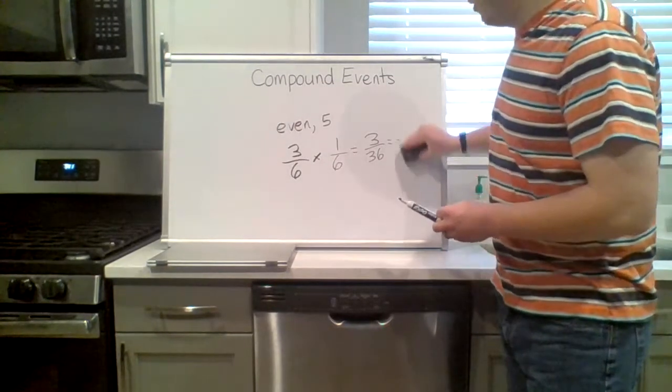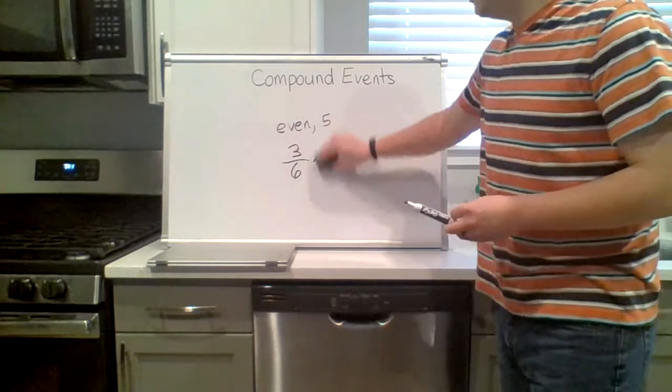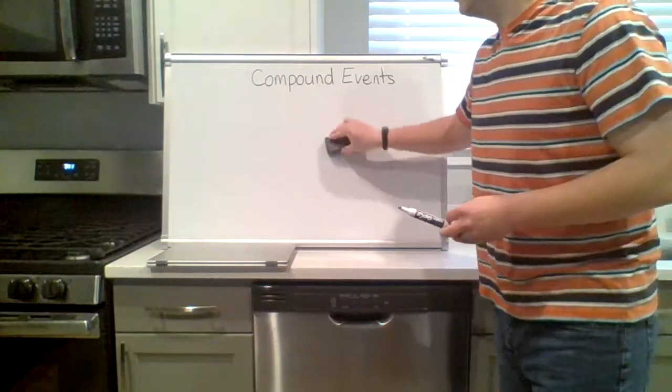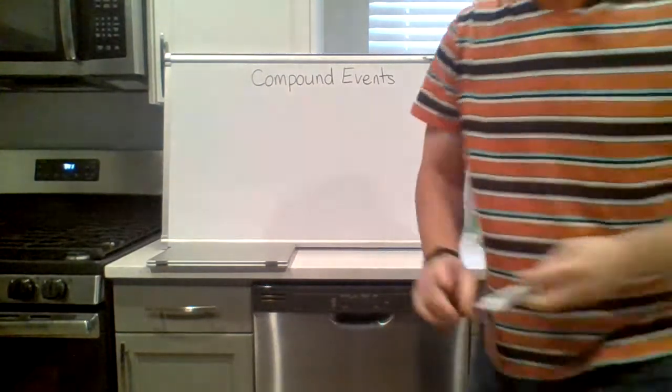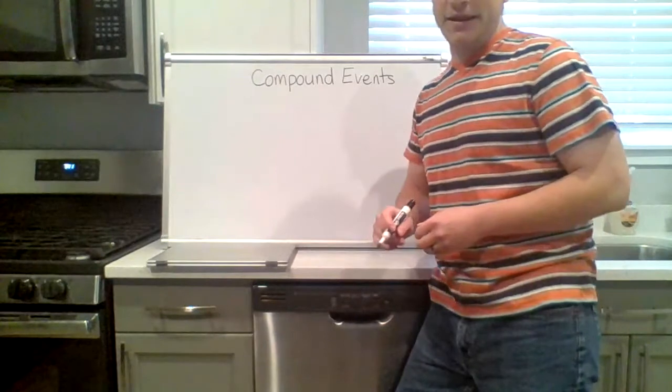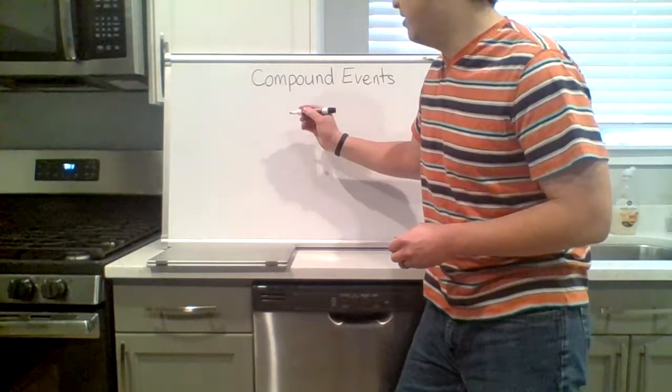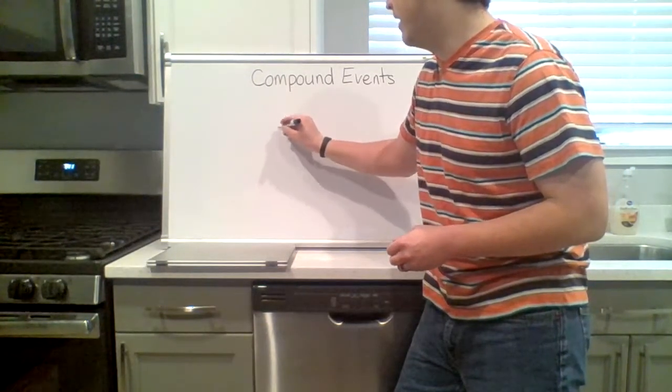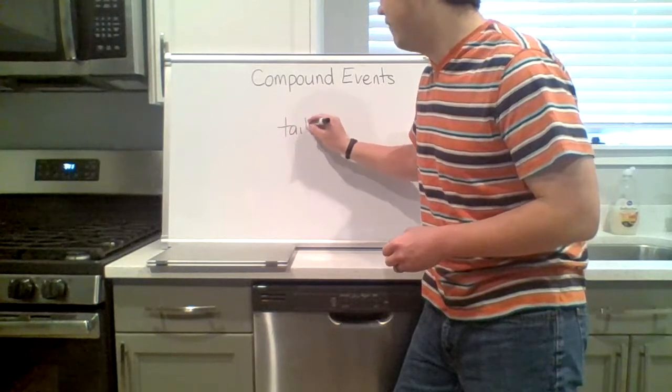Now what if you have more than two outcomes? What about the probability of flipping the coin and getting tails five times in a row?